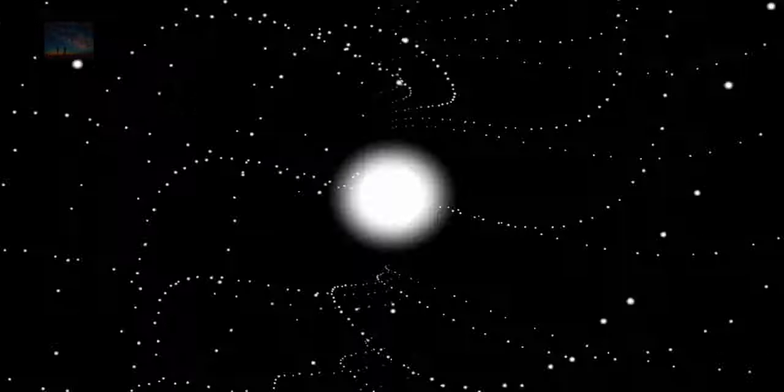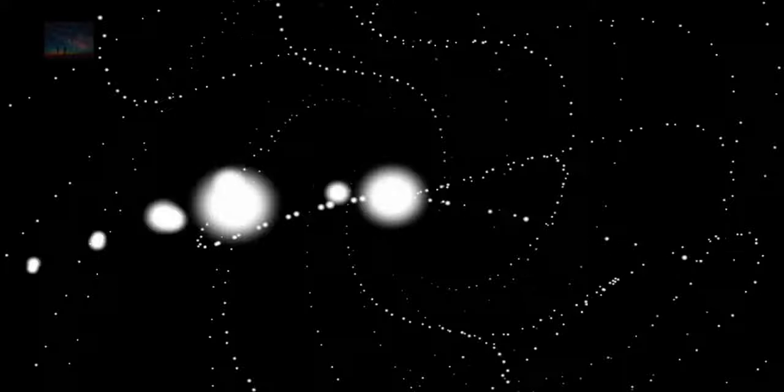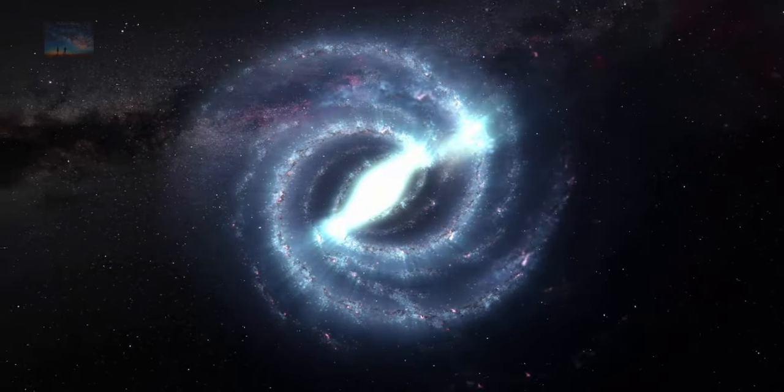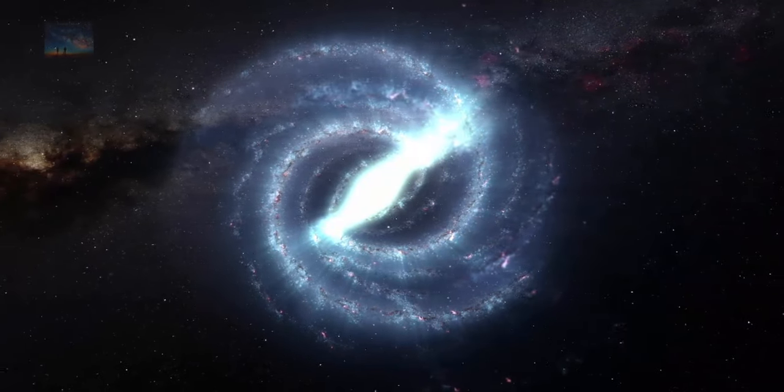About 250 million light years away, there's a neighborhood of our universe that astronomers had considered quiet and unremarkable. But now, scientists have uncovered an enormous, bizarre galaxy possibly formed from the parts of other galaxies.